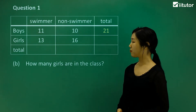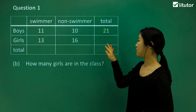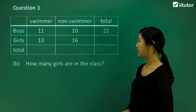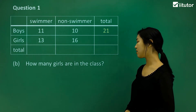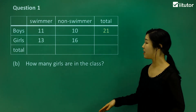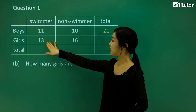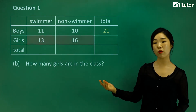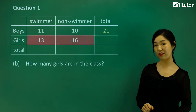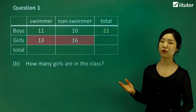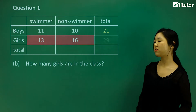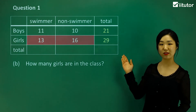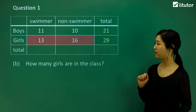Now let's look at part B. It's asking how many girls are there in the class. There are 13 swimmer girls and 16 non-swimmer girls. Adding those two up gives us the total number of girls: 13 plus 16 is simply 29. I've now filled in the second part of the table.